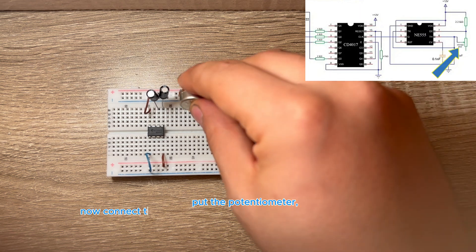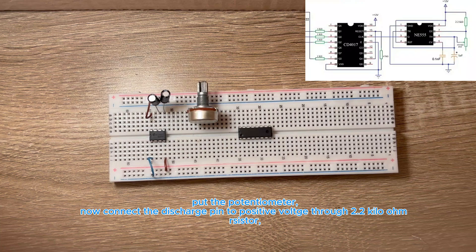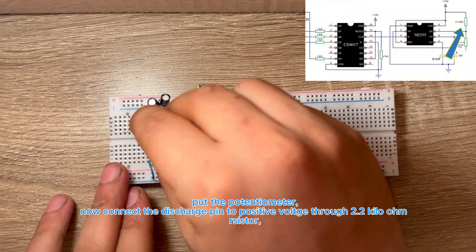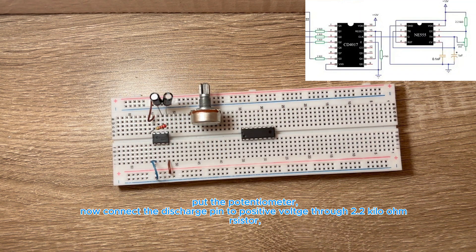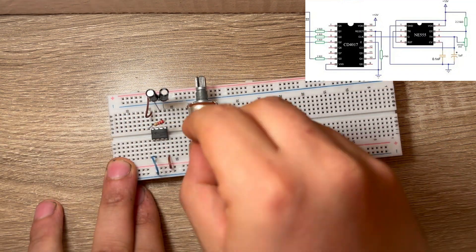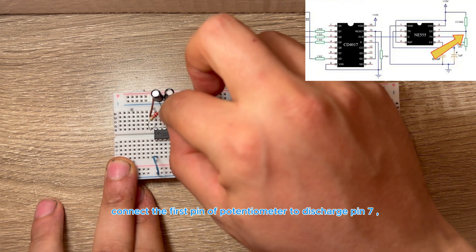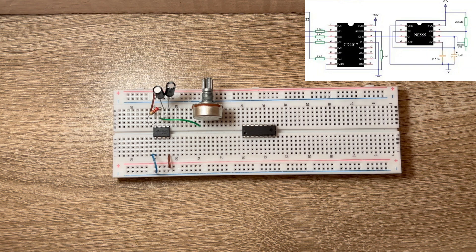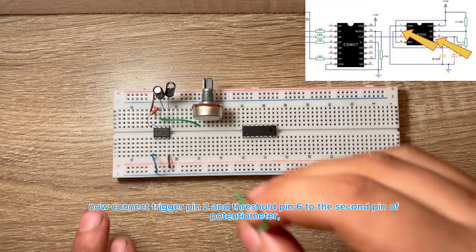Put the potentiometer. Now connect the discharge pin to positive voltage through 2.2 kOhm resistor. Connect the first pin of potentiometer to discharge pin 7. Now connect trigger pin 2 and threshold pin 6 to the second pin of potentiometer.